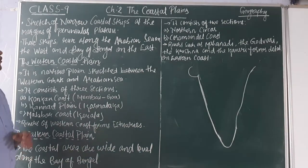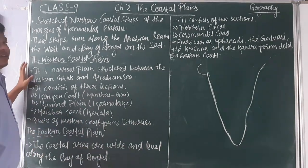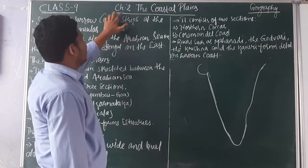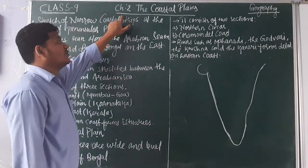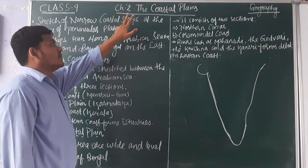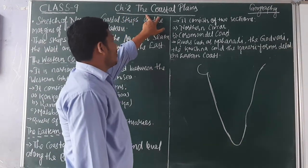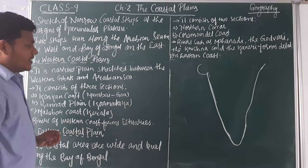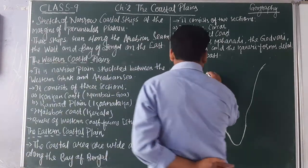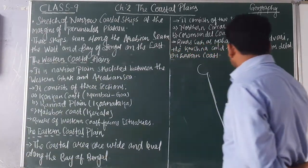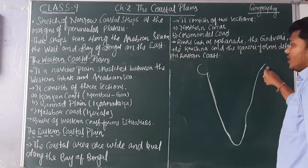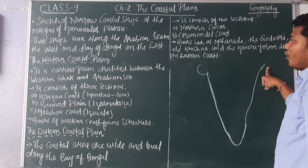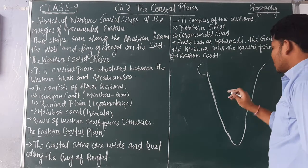Good morning. Today we shall cover the second lesson of Standard 9 — the physical features of India. The topic is the coastal plains. India has a long coastline of about 7,000 km.